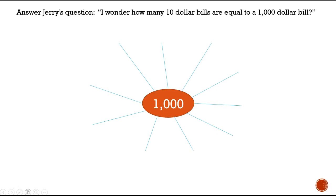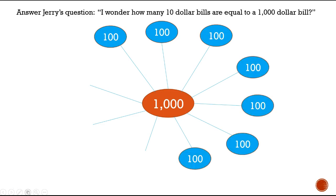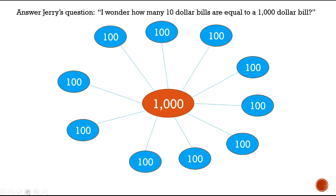Here's another way to answer Jerry's question. I made a web with $1,000 in the middle. First let's count how many $100 bills go into a thousand: 100, 200, 300, 400, 500, 600, 700, 800, 900, 1,000. Now, thinking back — 10 tens go into a hundred. Let's count by 10s with each bubble: 10, 20, 30, 40, 50, 60, 70, 80, 90, 100. Again we find there are 100 ten-dollar bills in a thousand.